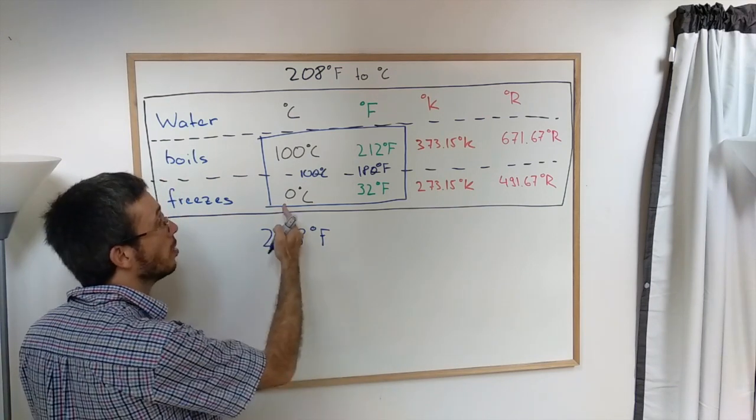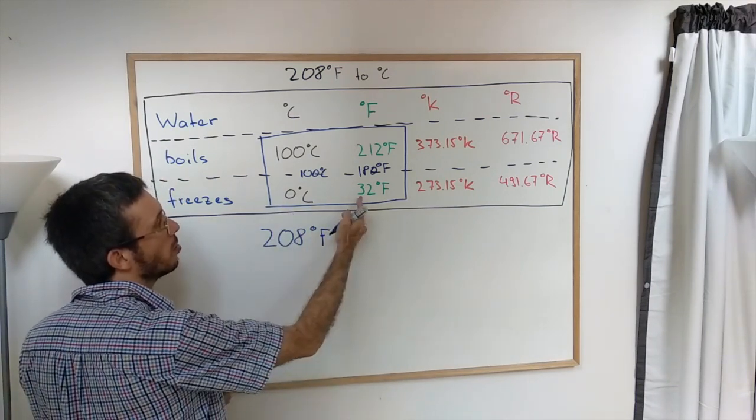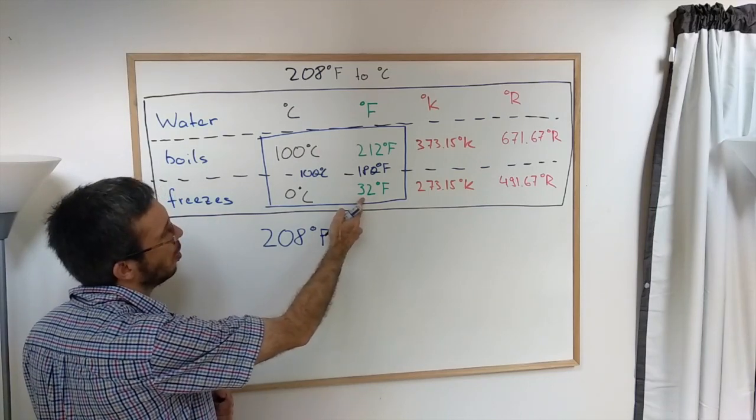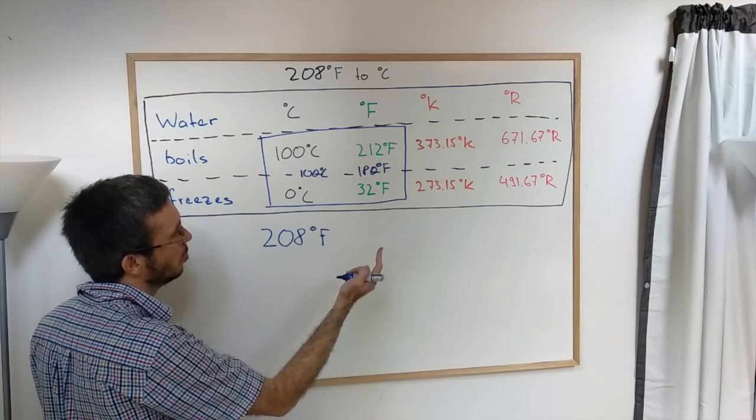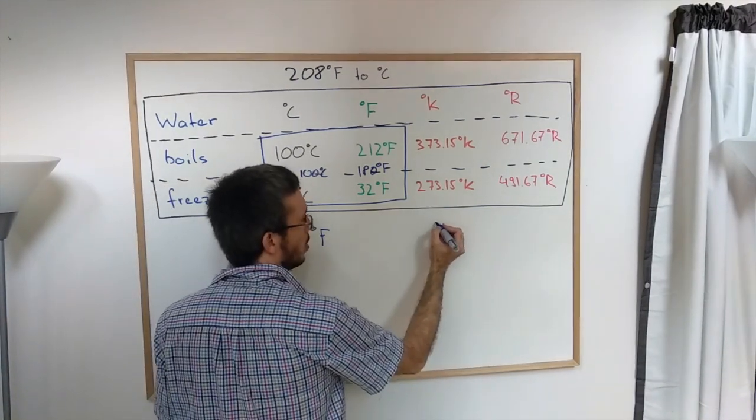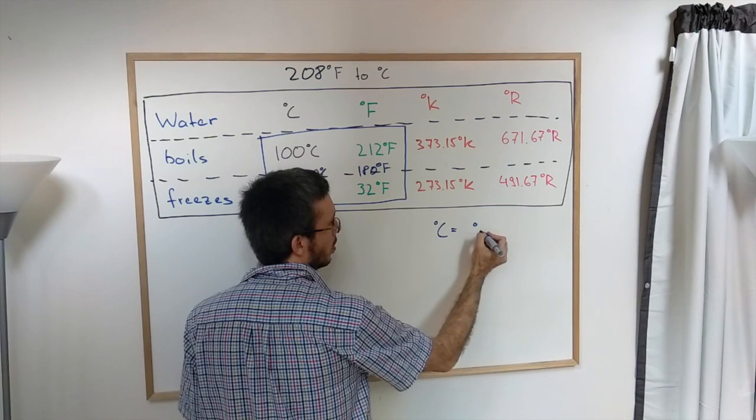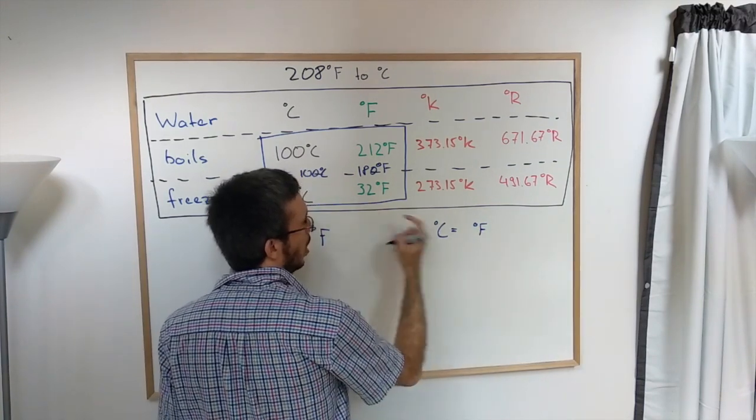Now the only problem is the two scales do not both start at zero, Fahrenheit starts at 32. So what we have to do, we have to offset it by 32. So we do Celsius is Fahrenheit minus the 32.